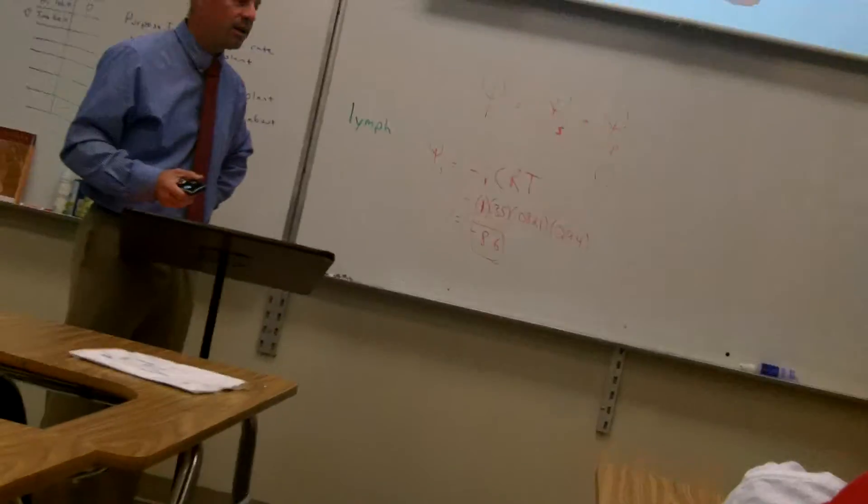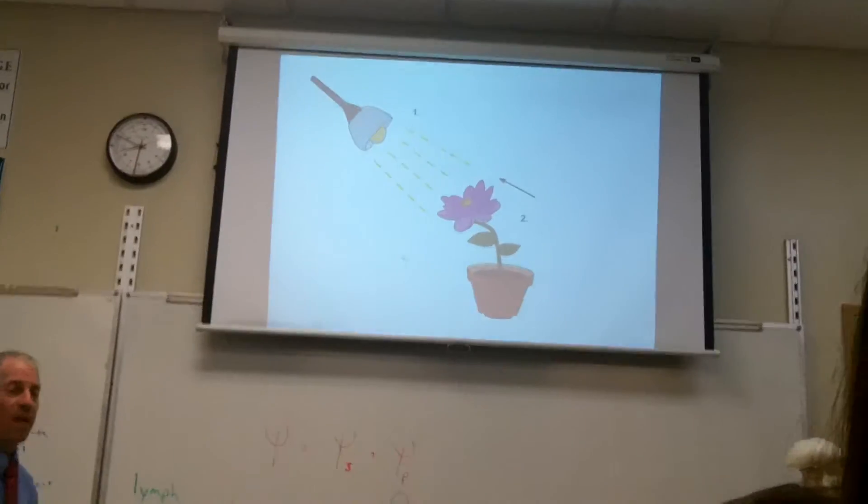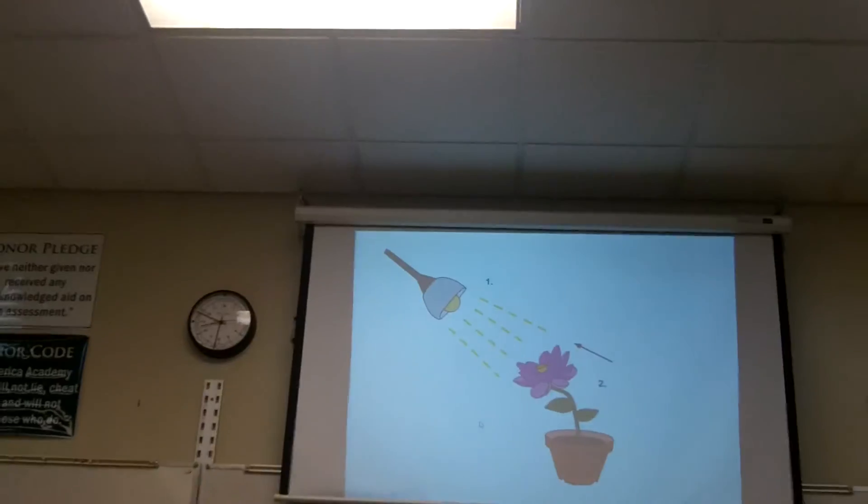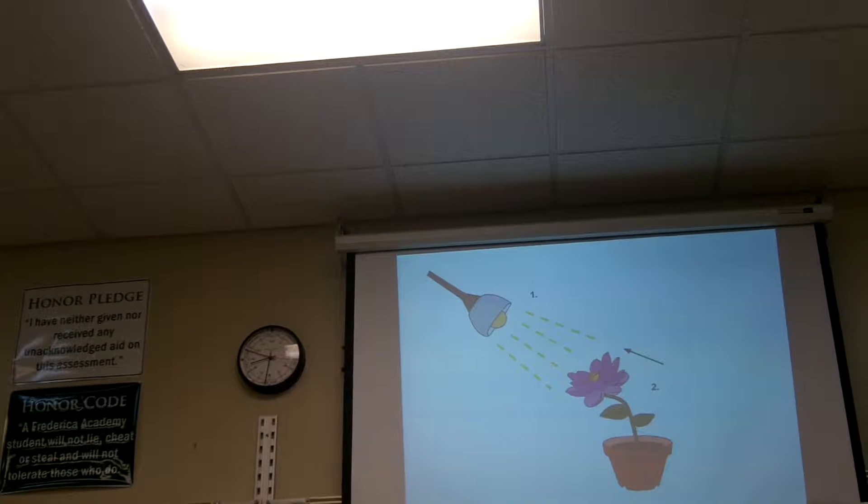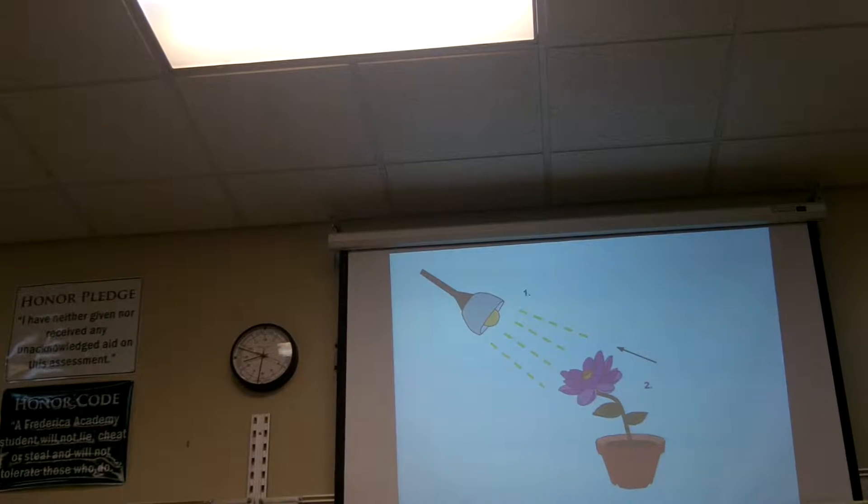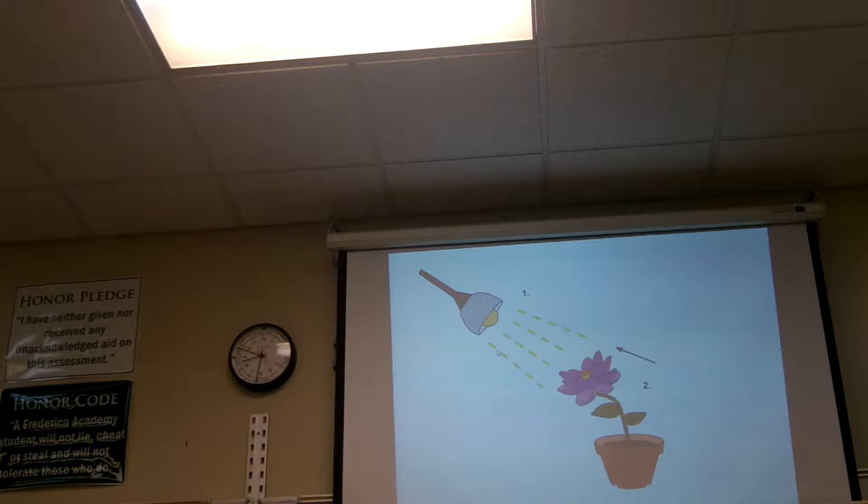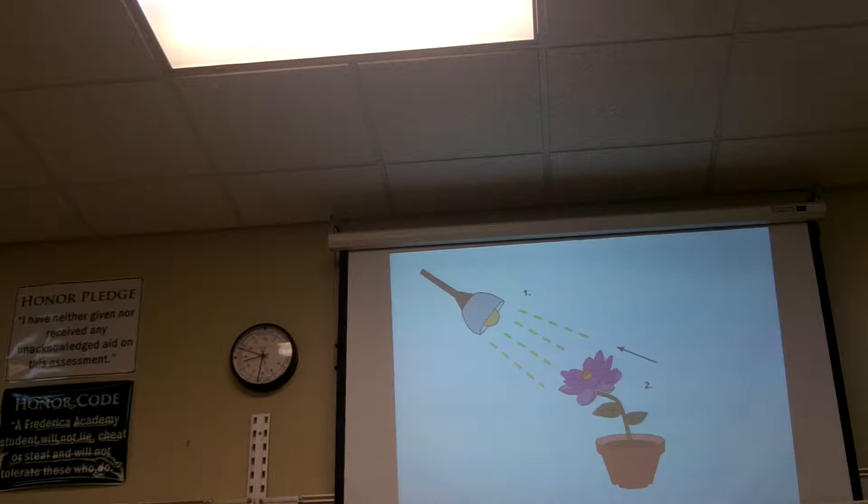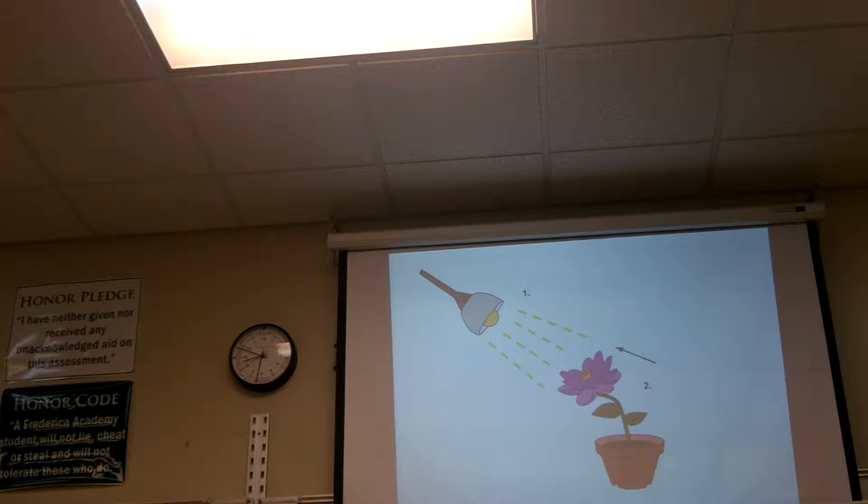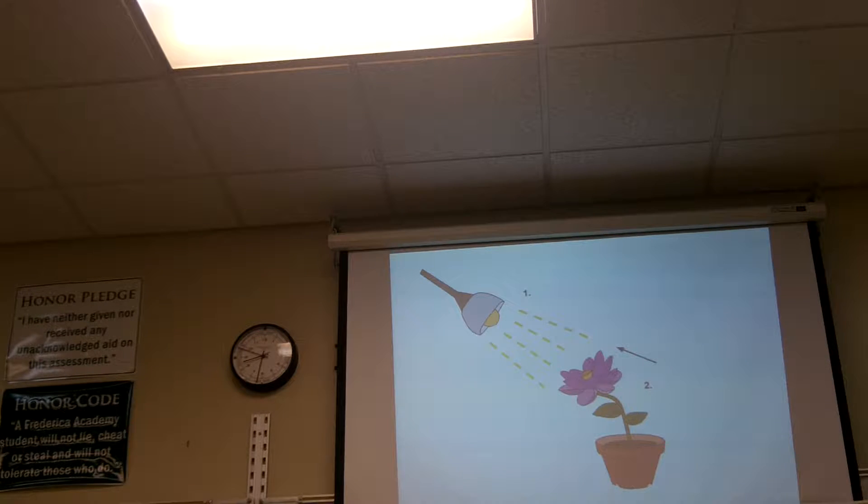We're talking about tropisms today. Now, tropism is a plant movement, and it's caused by these hormones. As you can see, this plant is bending toward the light. This is an example of what we call phototropism. Photo meaning light, tropism meaning a movement.